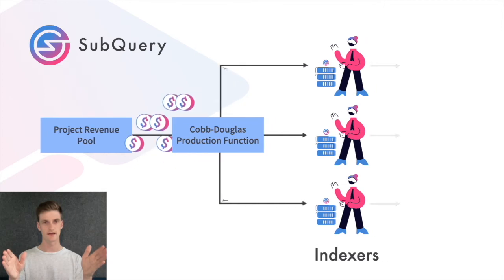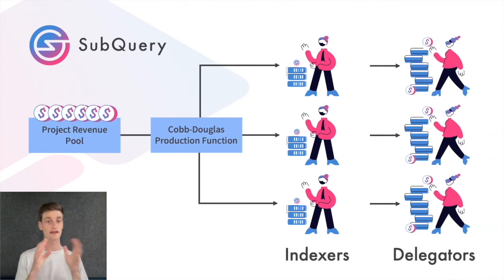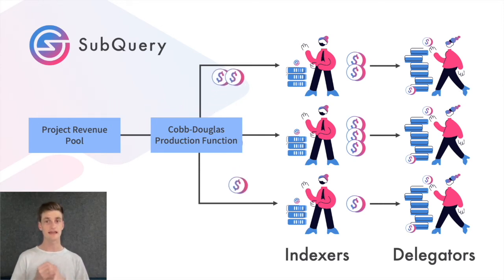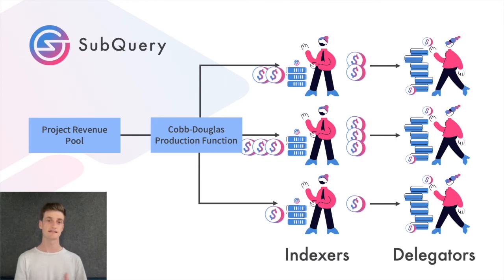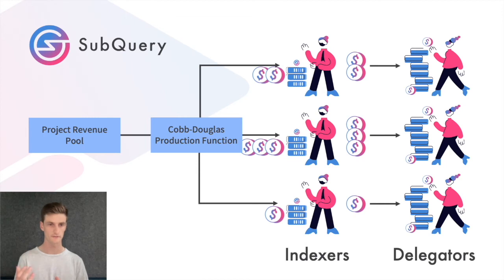And this is where delegators come in. Delegators can delegate their spare SubQuery tokens to indexers, and each indexer can publish a query fee revenue share rate to attract that investment. Those delegators will be rewarded at the end of that staking era with a proportion of the query fee revenue earned by the indexer in that period. The rate that indexers advertise is locked for a full 28-day staking era cycle, and a decrease to that rate must be advertised for an entire cycle before coming into force.